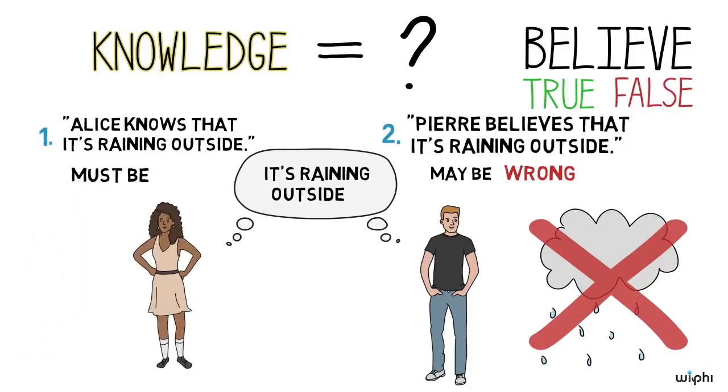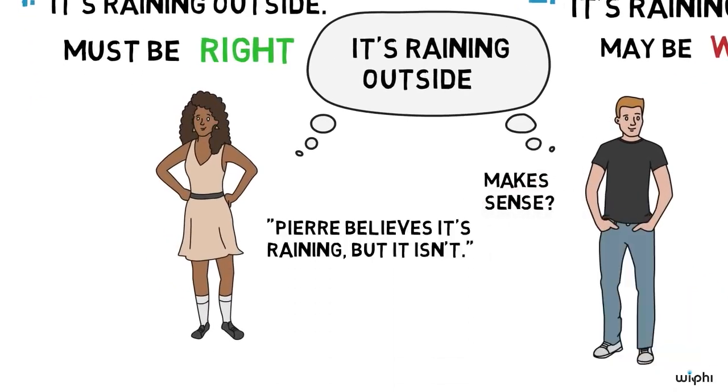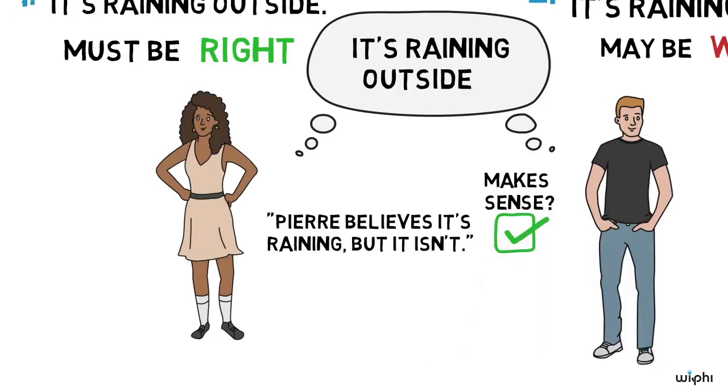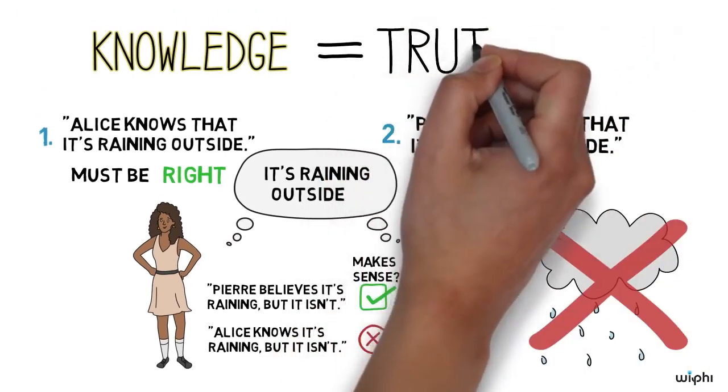What we actually know, on the other hand, has to be true or factual. So, there's no problem saying Pierre believes it's raining but it isn't. While it sounds weird to say, Alice knows it's raining but it isn't. This is because attachment to the truth is built into the meaning of knows that.